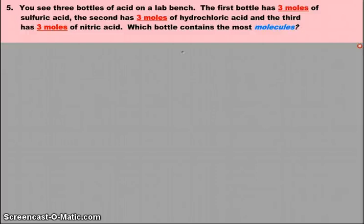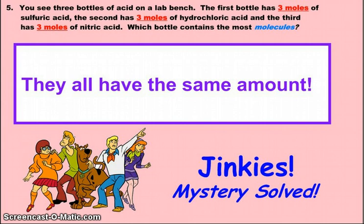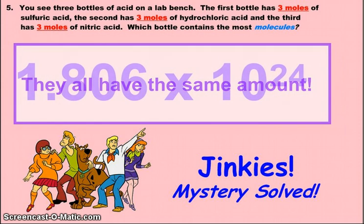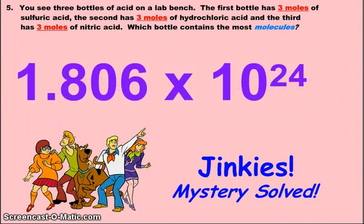All right, question five. Three bottles of acid are on a lab bench. The first bottle has three moles of sulfuric acid. The second has three moles of hydrochloric acid. The third has three moles of nitric acid. Which bottle contains the most molecules? Of course you know that they all have the same amount. It doesn't matter if you have one mole of each, two moles of each, a hundred moles of each. If you have the same number of moles, you have the same number of particles. If you actually wanted to calculate it out to prove it, each of them would be three times Avogadro's number, and it would end up being 1.806 times 10 to the 24th. But either way, we have the same number of molecules in each one of those.